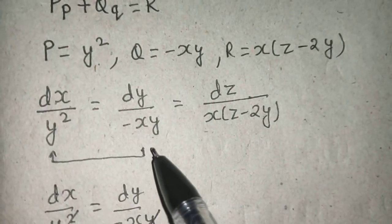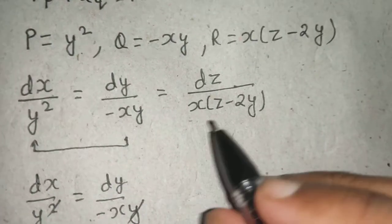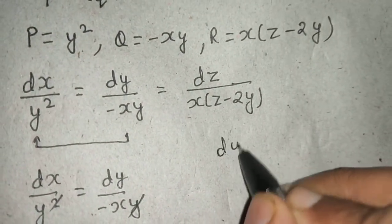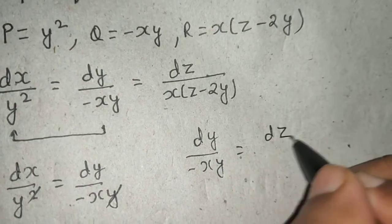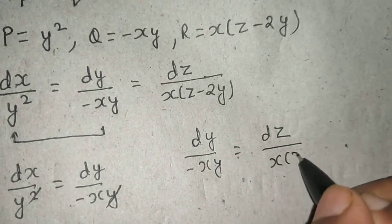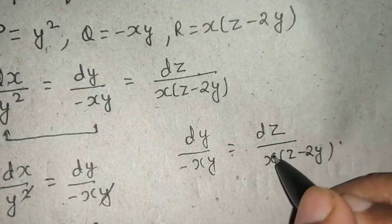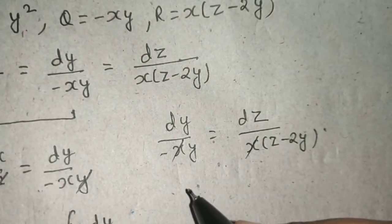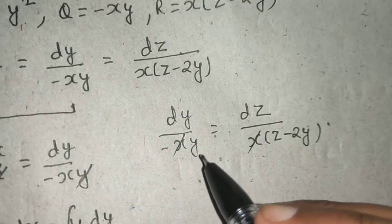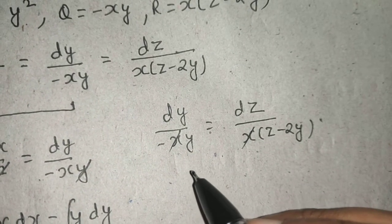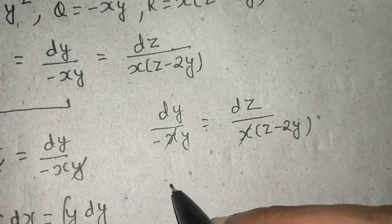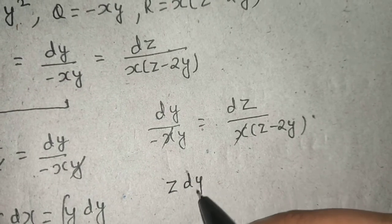So you will have to eliminate x. For eliminating x you have to put the second equation into the picture, so dy/(-xy) = dz/(x(z-2y)). This will eliminate x and make the job a bit simpler.